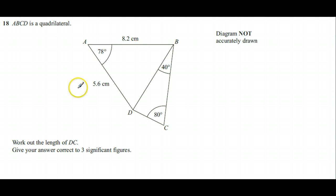Hi there, this is question 18 from the Edexcel unit 3 maths paper in June 2012. We're looking at a quadrilateral that's been split into two triangles, and since neither of the triangles are right-angled, we're going to be looking at sine rule and cosine rule.